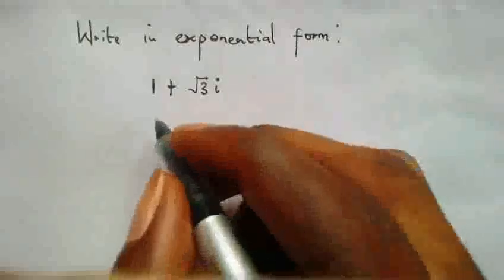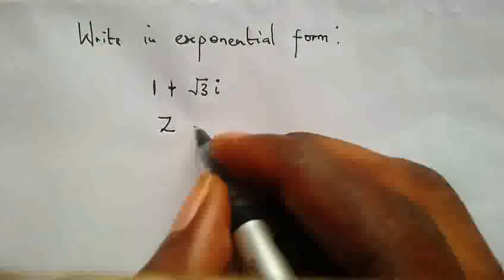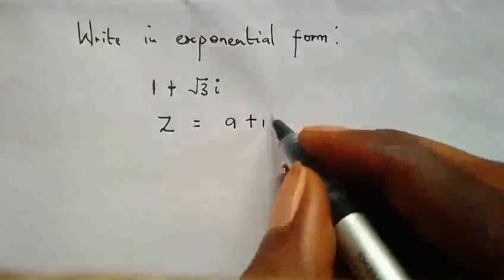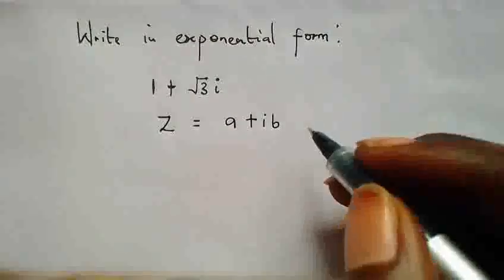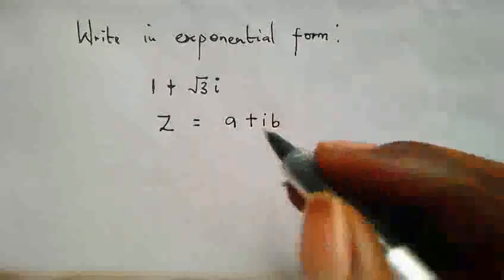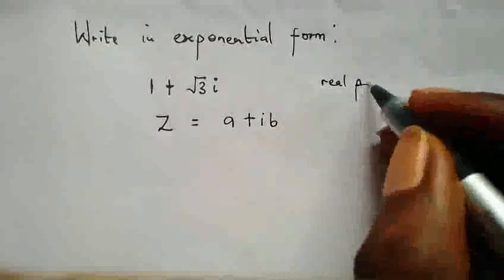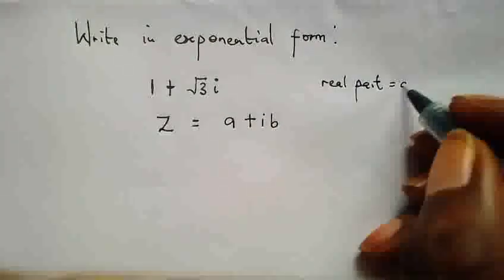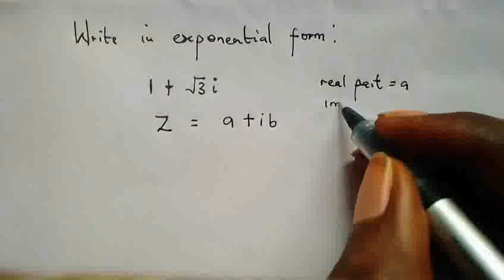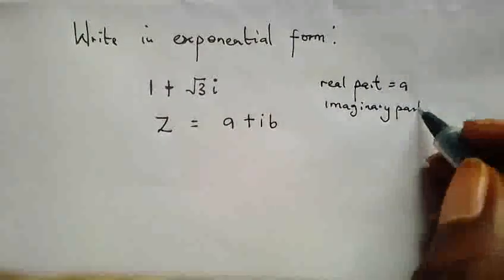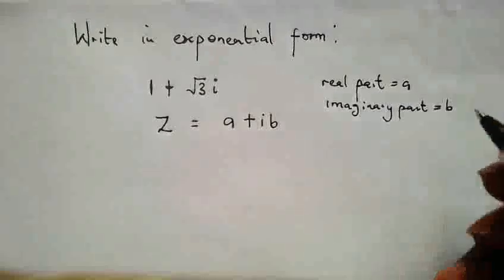Suppose we have the complex number Z is equal to A plus IB. You know a complex number must have a real part and also an imaginary part. So here we say that our real part is equal to A while our imaginary part is equal to B.